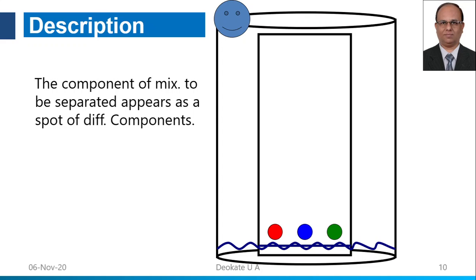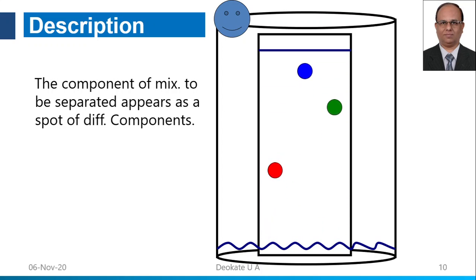After dipping the paper into the mobile phase, it starts traveling. Depending on their differential distribution characteristics, substances move different distances in the chamber. We measure the distance moved by the substance and the distance moved by the solvent front — this ratio is known as the retention factor or RF value — which can be used to identify unknown samples.